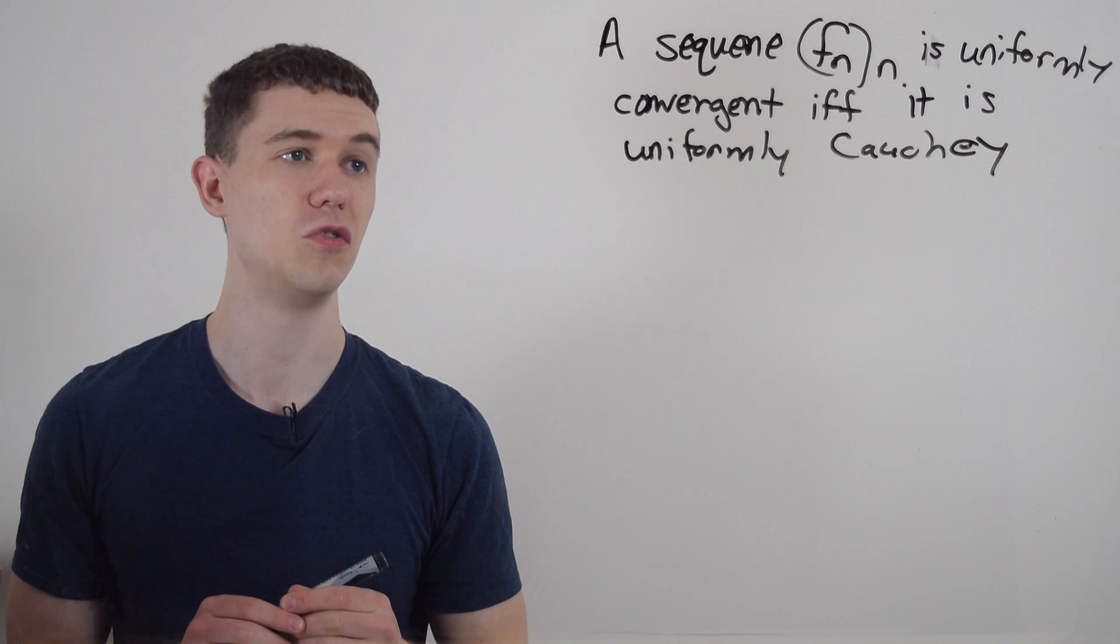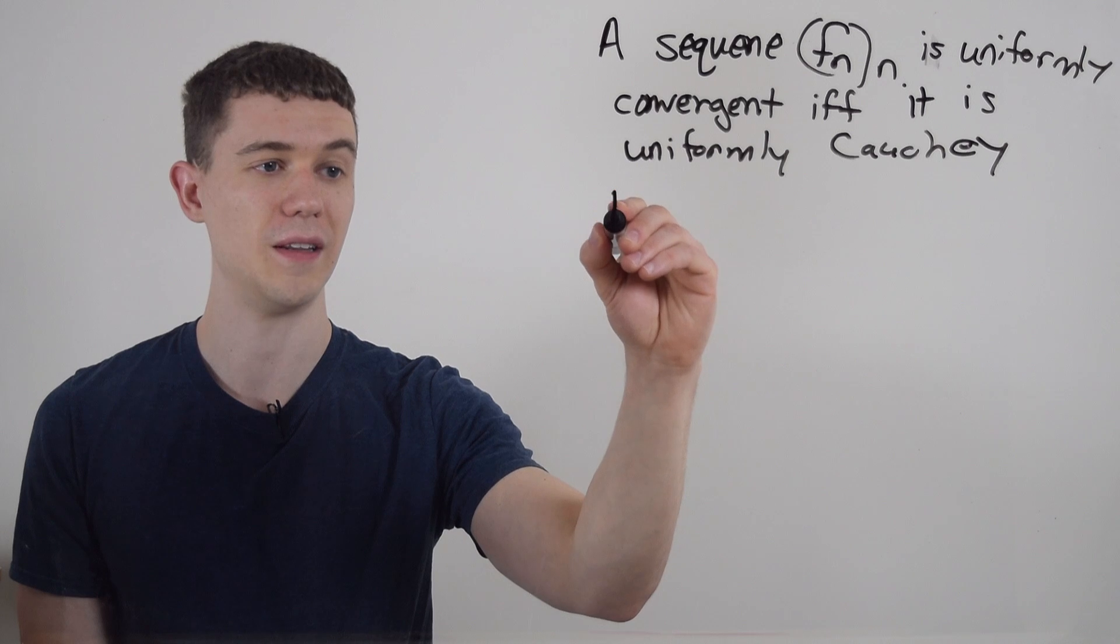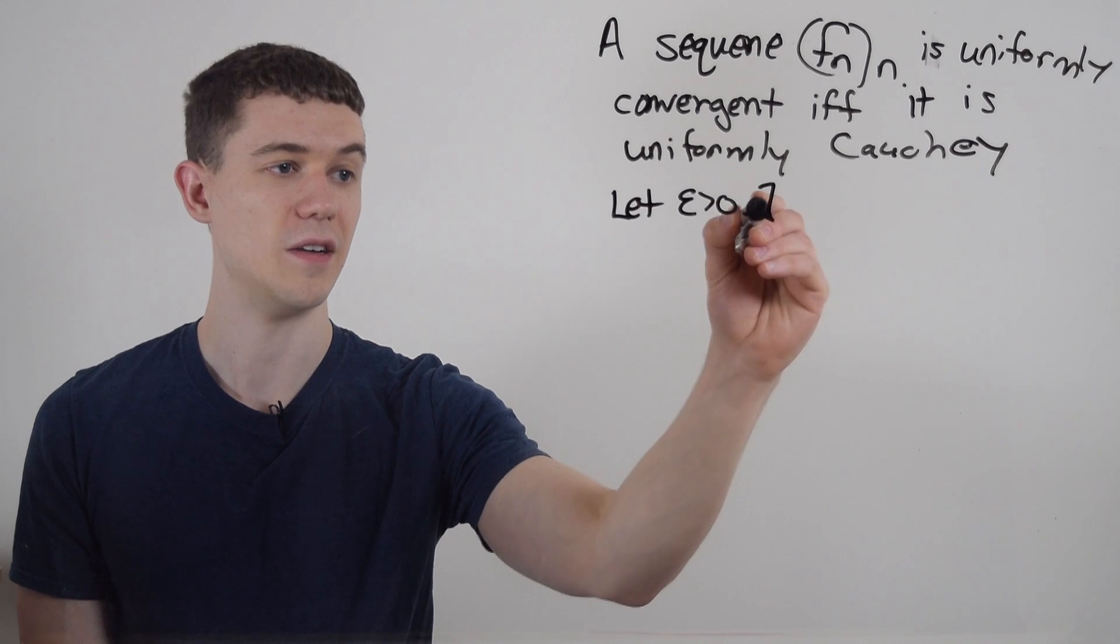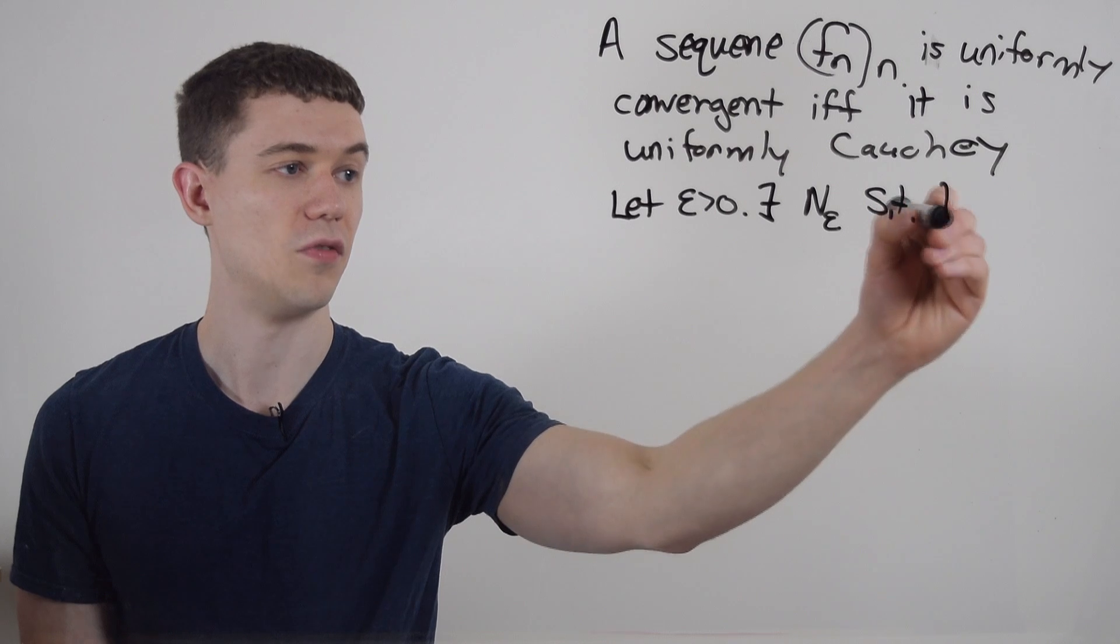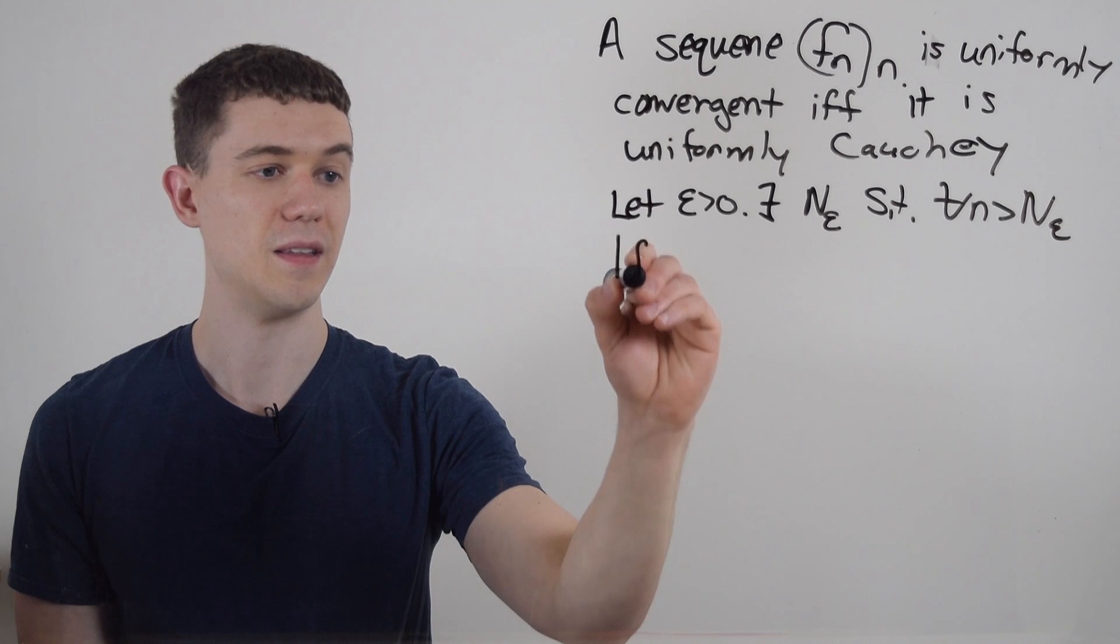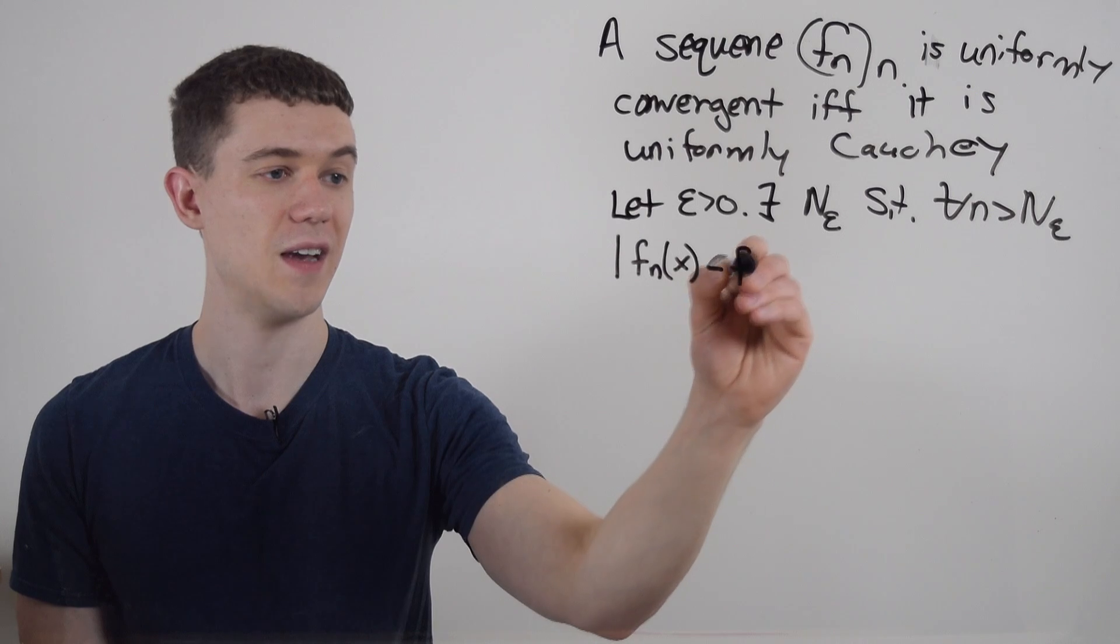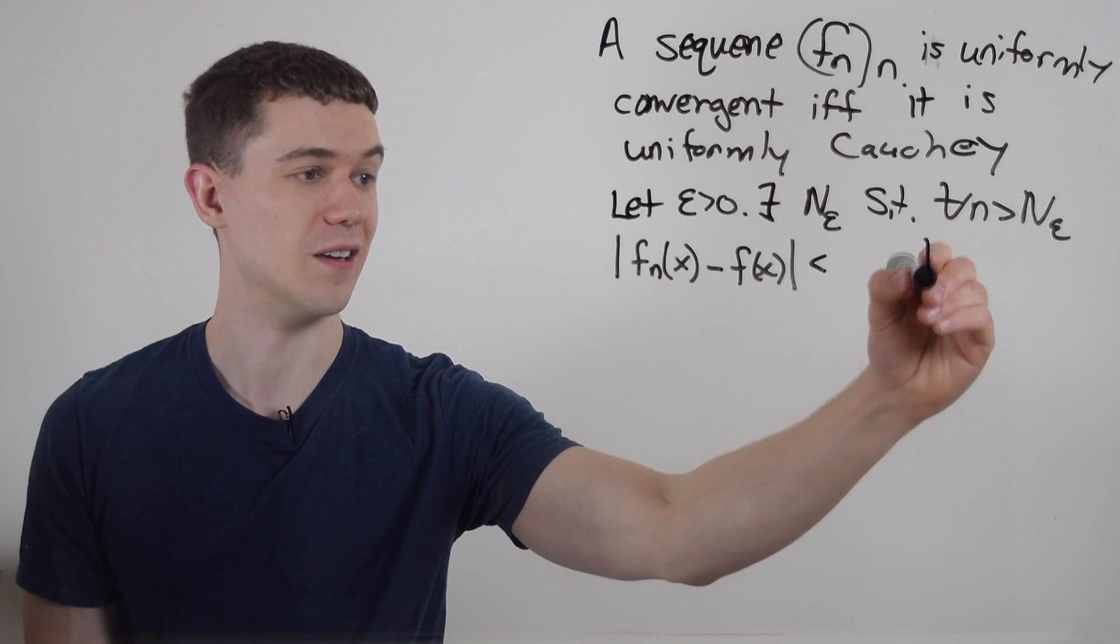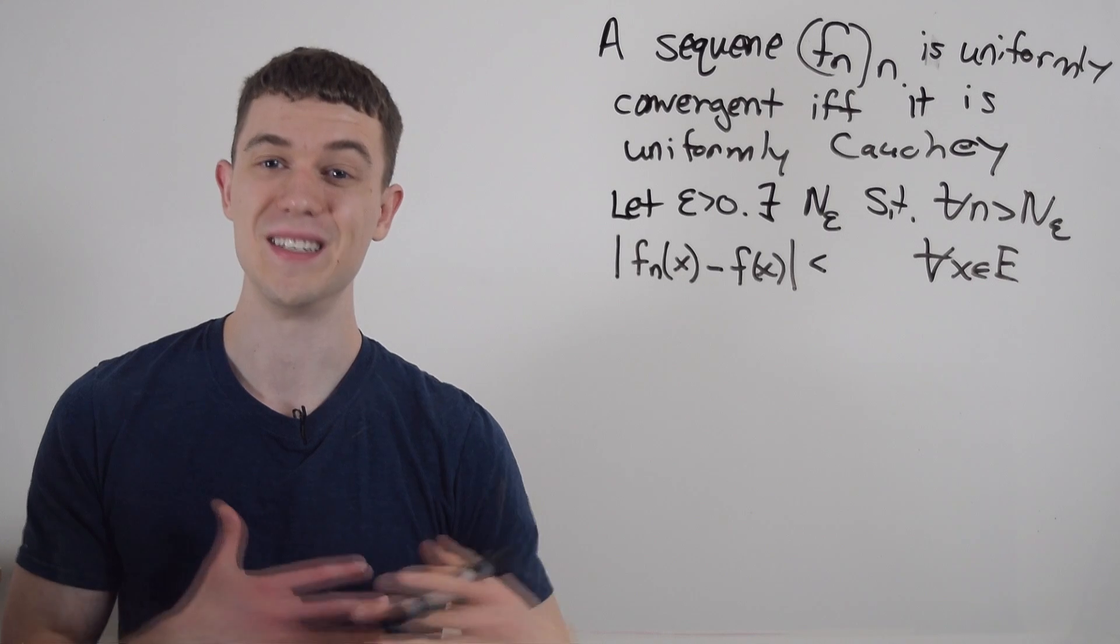Let's start by assuming that this sequence of functions f sub n is uniformly convergent. That would mean that if I let epsilon greater than zero there exists some capital N depending on epsilon such that for all n greater than N sub epsilon, the distance between the sequence of functions and the function it converges to, I'll just call it f of x, is less than epsilon for all x in E, where E is the domain of the sequence of functions.